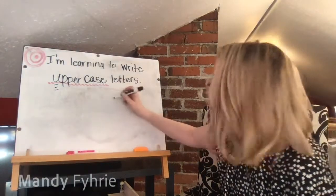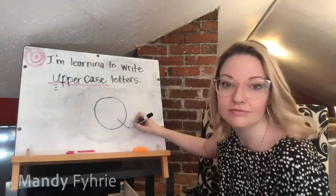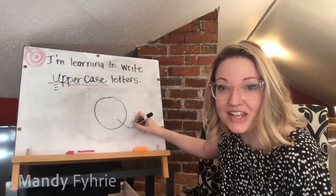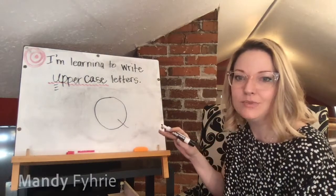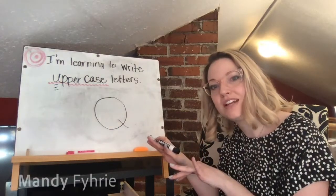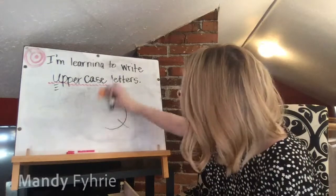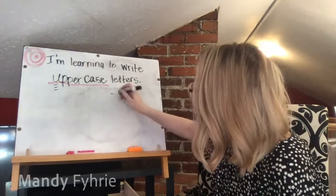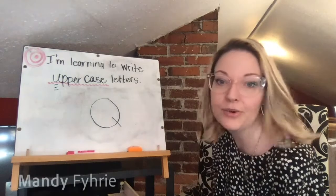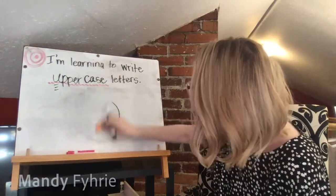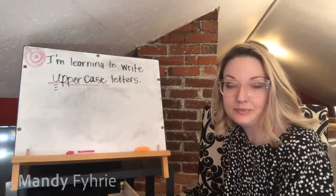Capital Q looks just like an O but with a little line through it. Magic C all the way around, stop, and put a line through it. It looks like a little kickstand on a bicycle — a little stand leaning to the side. Magic C all the way around, stop, put a little line through it.